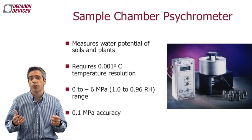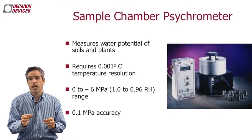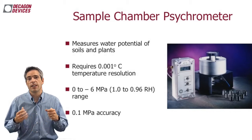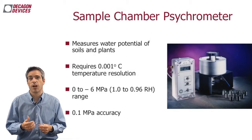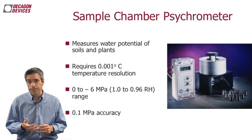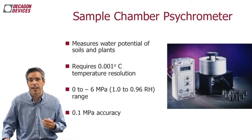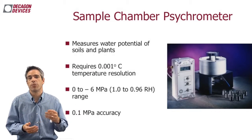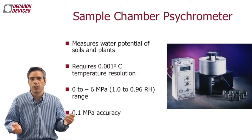There is also a lab-based thermocouple psychrometer that works differently. Soil samples are placed in sample cups inside a large aluminum block that brings everything to isothermal conditions, then a thermocouple psychrometer measures the wet bulb to get relative humidity and therefore water potential. The range is about zero to negative 6 megapascals. However, the upper limit is only about negative 0.1 megapascals, so it doesn't even resolve the plant optimal range.